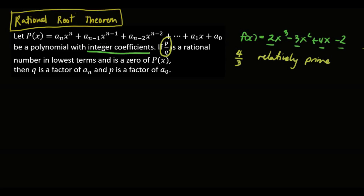The proof of the Rational Root Theorem has two parts. The first one is proving that Q is a factor of a_n, and the other one is proving that P is a factor of a_0. So let's start with the proof.